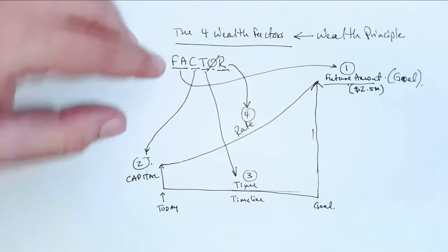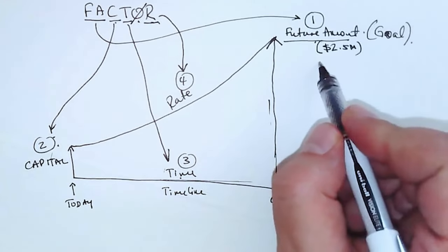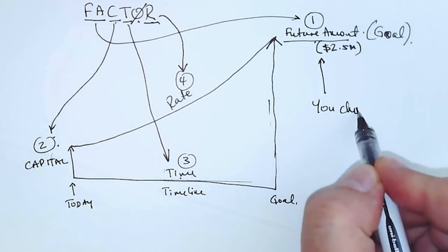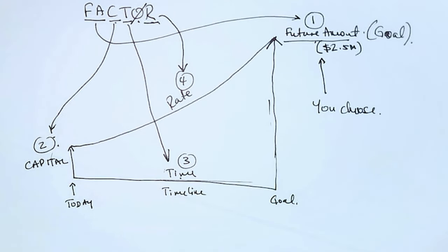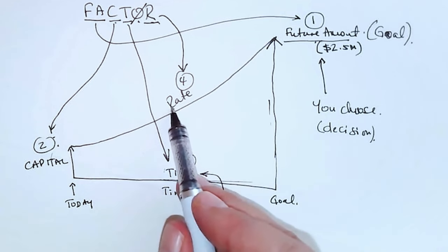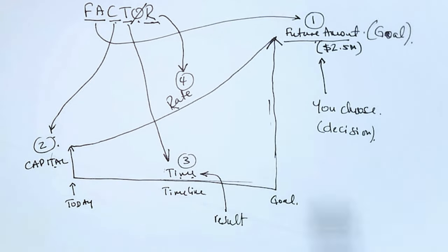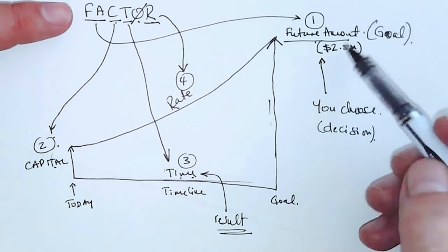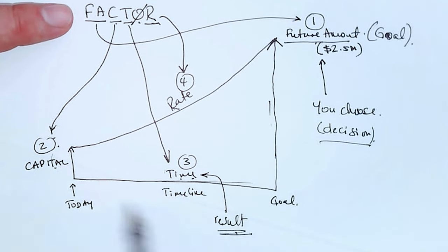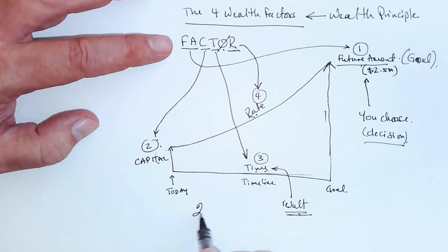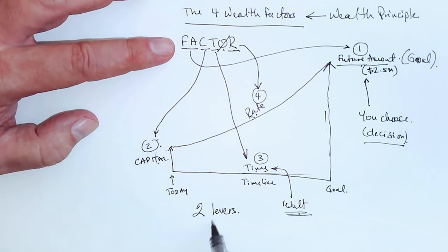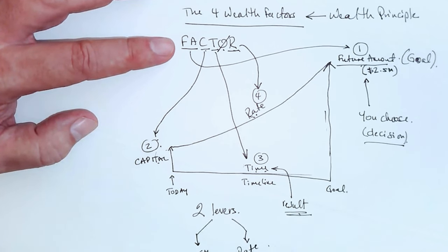Now let's think about this further. This here, you choose. You say I want X dollars in the future, so this is a decision that you make. Time is really a result of you optimizing the two other levers: capital and rate. So this is a result. So out of the four, there's one that we choose and one is the result of the other two. So now you're left with two levers. The two factors or the two levers that you control: capital and rate.